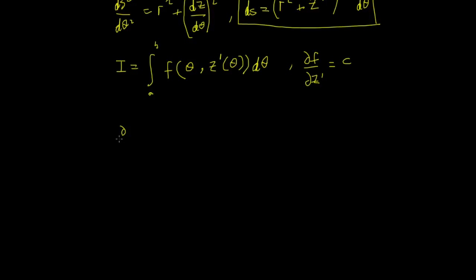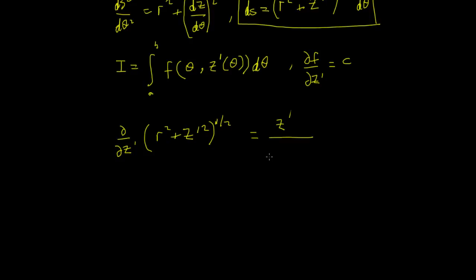So we differentiate with respect to z′: ∂/∂z′ of (r² + z′²)^(1/2). Bringing the half down gives a power of minus one-half, and differentiating inside gives 2z′. The 2s cancel, and we end up with z′ / (r² + z′²)^(1/2) = constant.